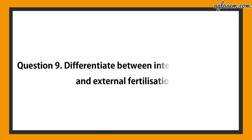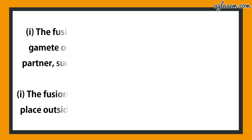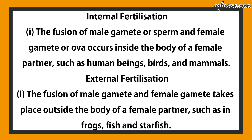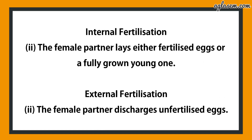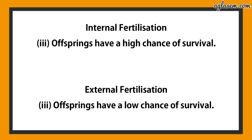Question number 9 says: differentiate between internal fertilization and external fertilization. Internal fertilization: the fusion of male gamete or sperm and female gamete or ova occurs inside the body of the female partner, such as human beings, birds and mammals. The female partner lays either fertilized eggs or a fully grown young one. Offspring have a high chance of survival. External fertilization: the fusion takes place outside the body of the female partner, such as frogs, fish and starfish. The female partner discharges unfertilized eggs. Offspring have a low chance of survival.